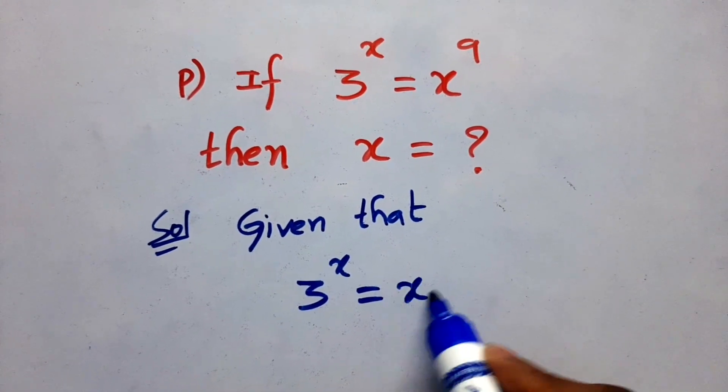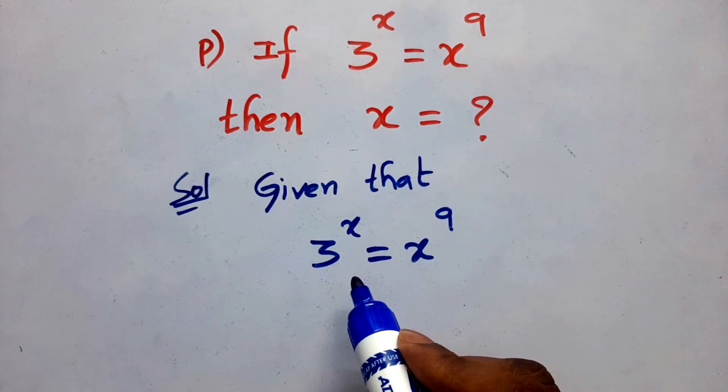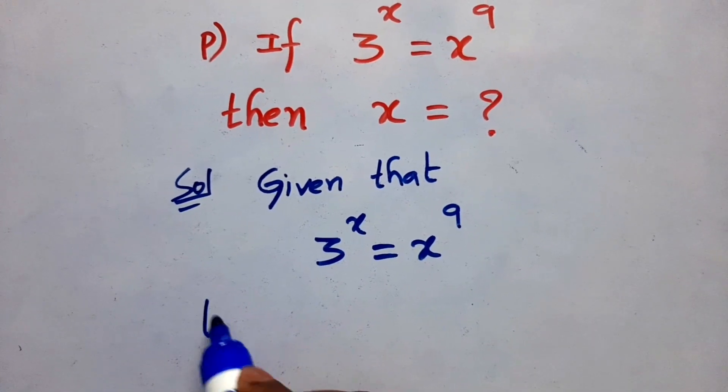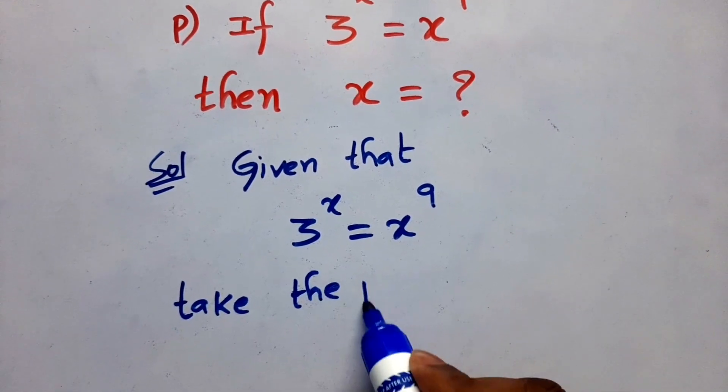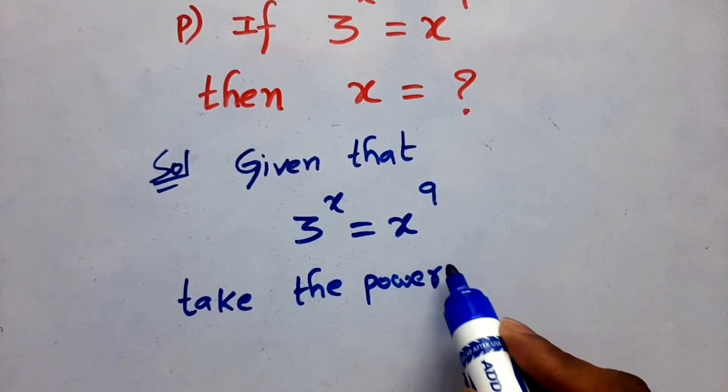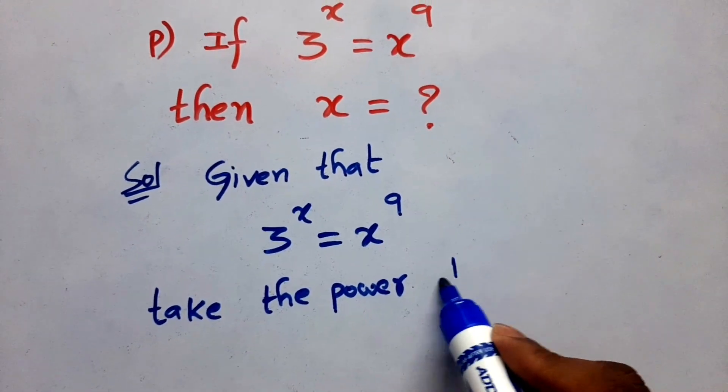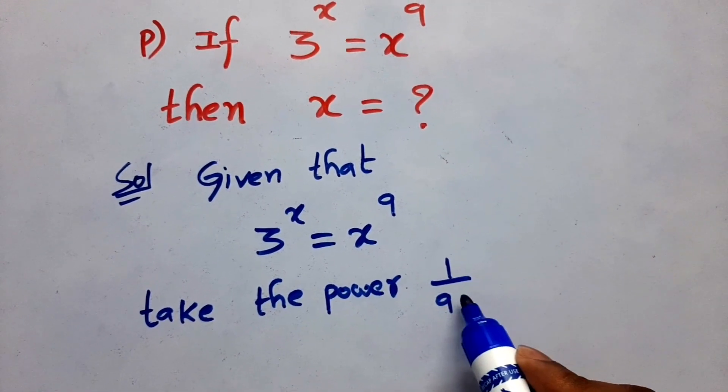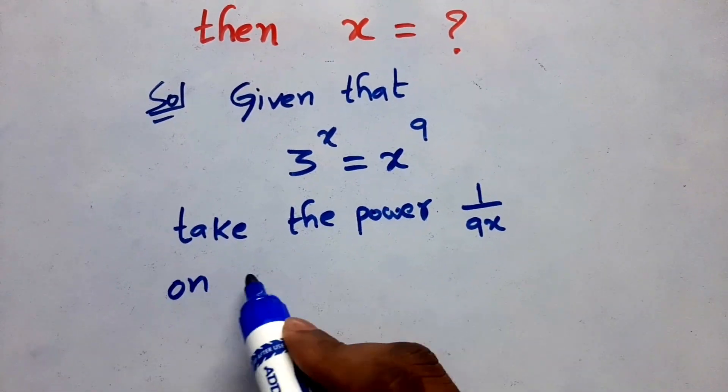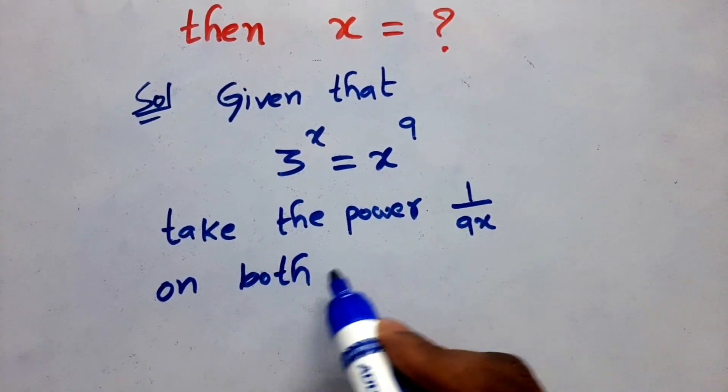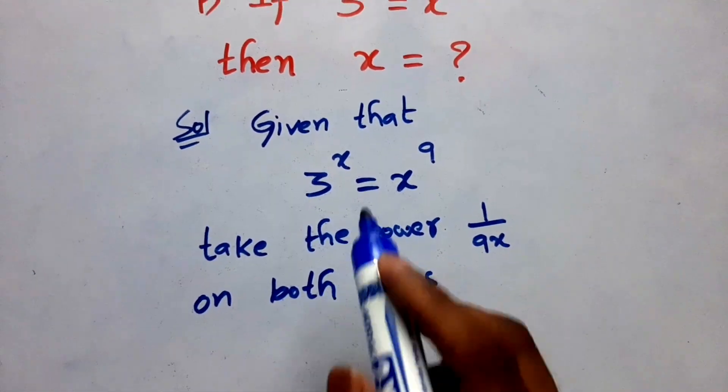Next, what I have to do? Take the power 1 by 9x, 1 by 9x on both sides. Then after it becomes 3 to the power x, whole to the power 1 by 9x is equal to x to the power 9, whole to the power 1 by 9x.